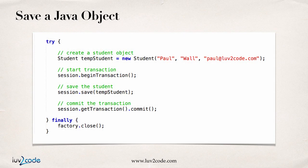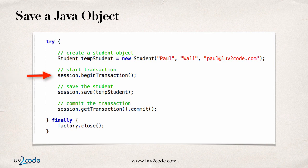Moving ahead to the next slide, this is how we actually save a Java object. Inside our try-catch block, the first thing I do is create the student — saying new Student, give first name, last name, email address. This is plain old Java, nothing Hibernate-specific. Then I actually start a transaction: session.beginTransaction. Then I save the student using session.save and passing in the temp student object, which saves a given object to the database.